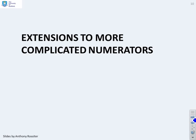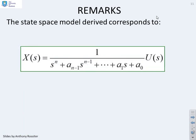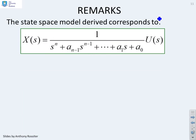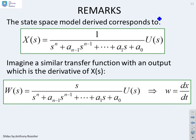Now, how am I going to extend this to more complicated numerators? Because in general, a numerator is not just a constant. The state-space model that we derived corresponds to something like this. You'll notice that I've now put 1 in the numerator just to keep life simple. So what happens if instead of x of s, I wanted w of s, and if you look, you'll see the differences. I've now got s in the numerator.